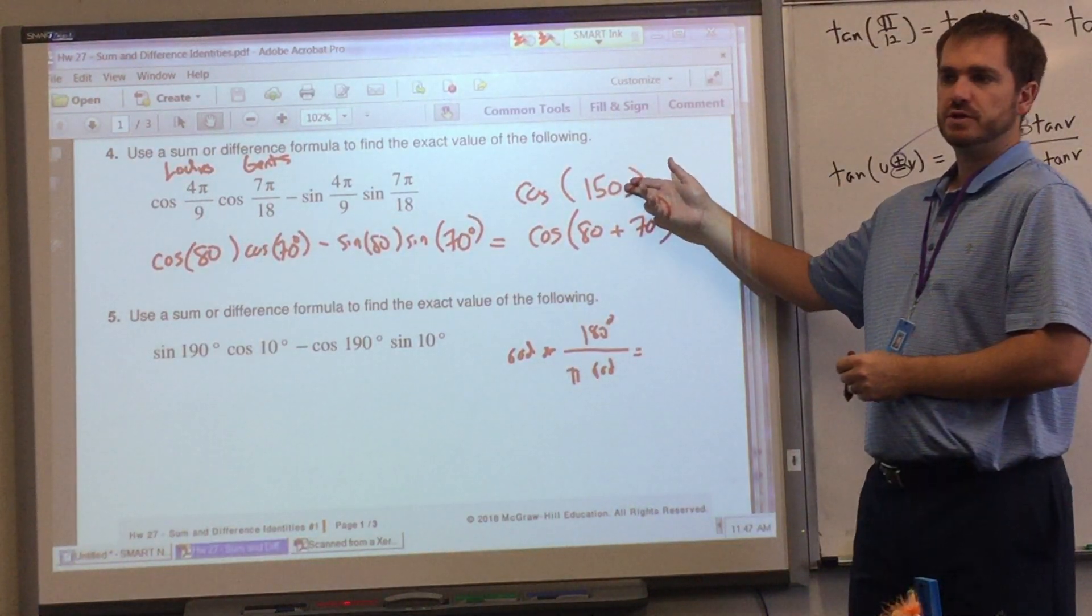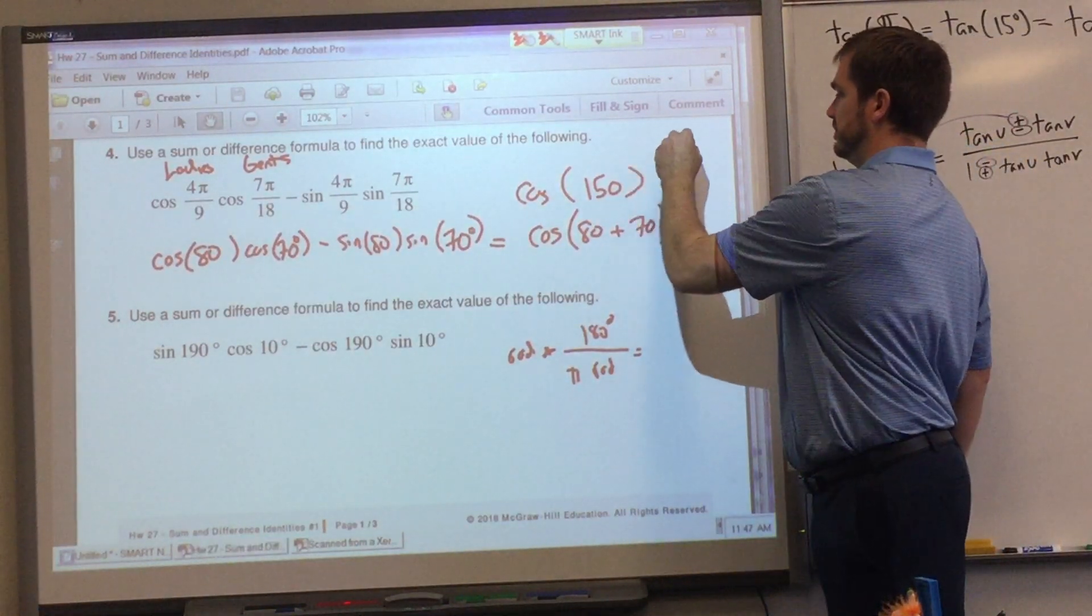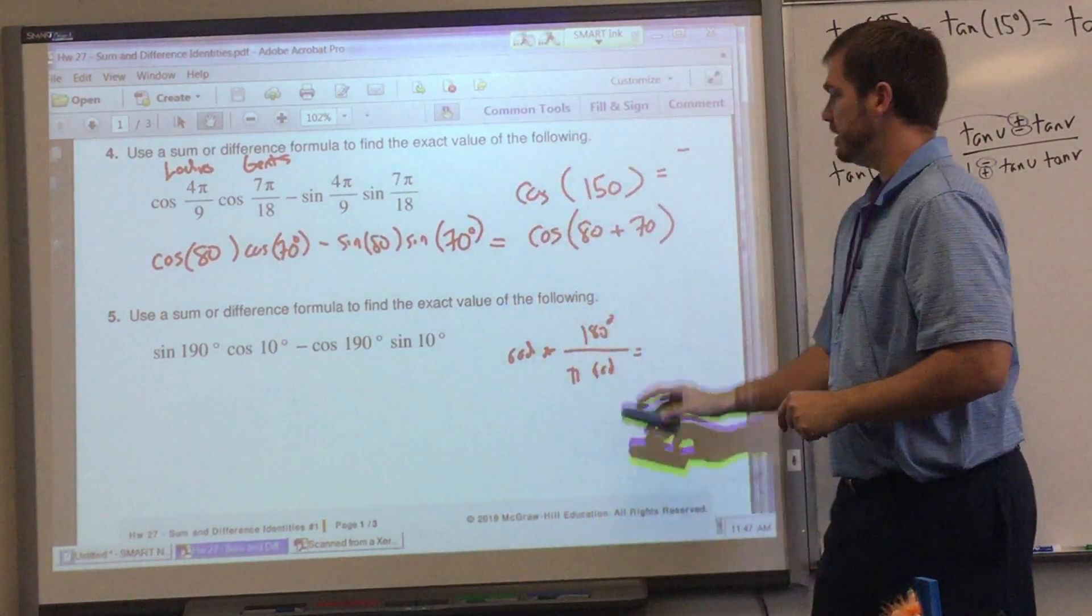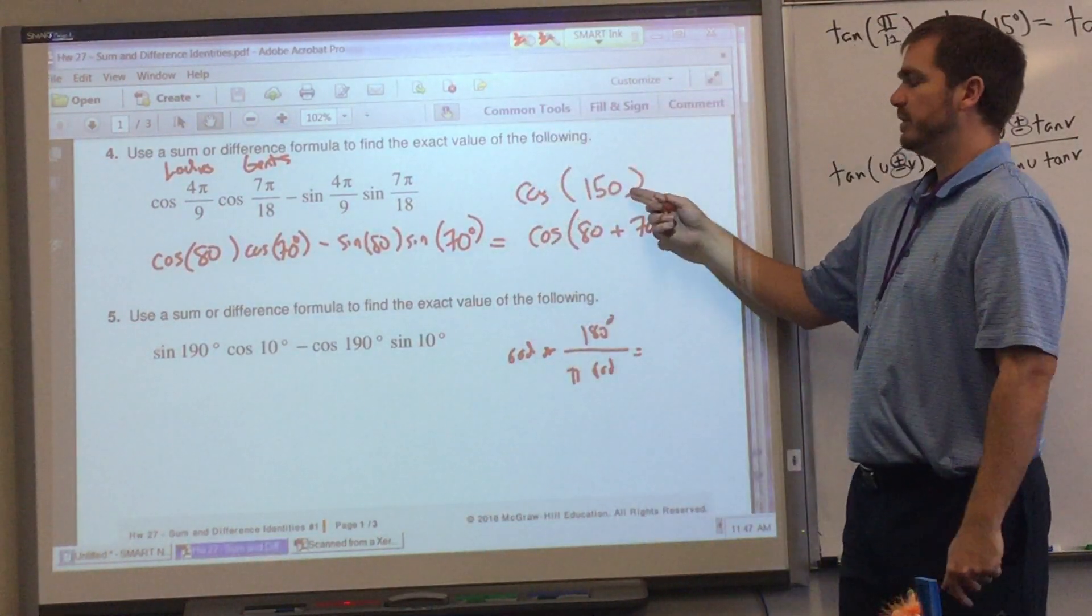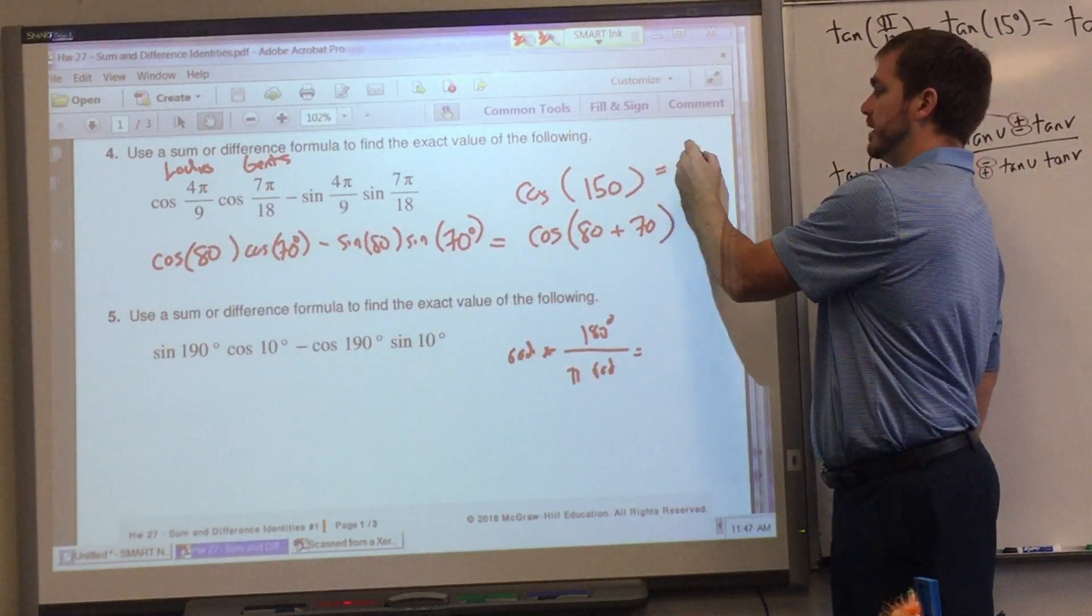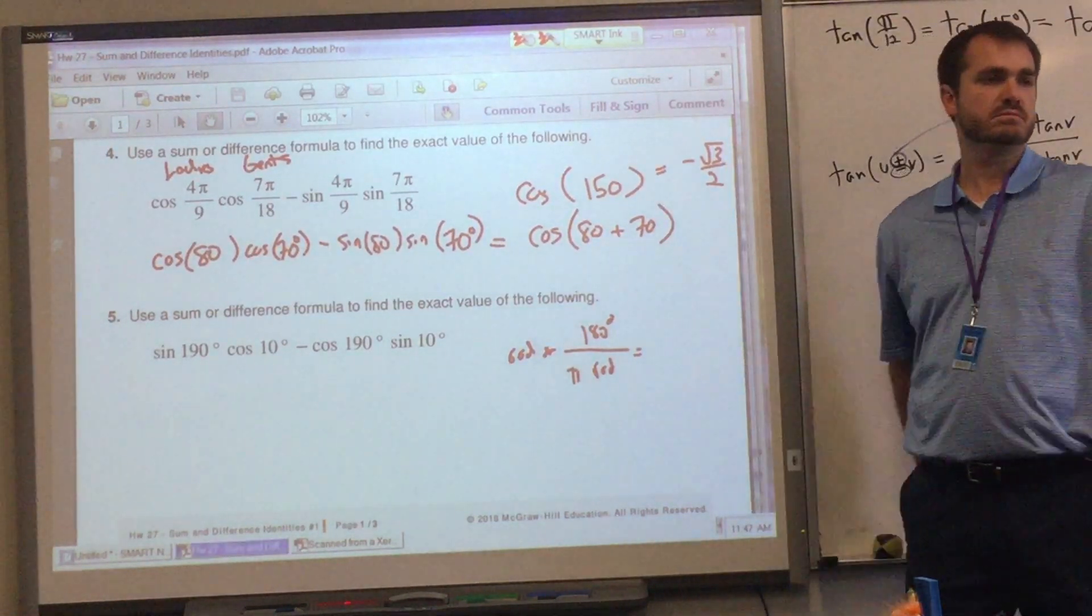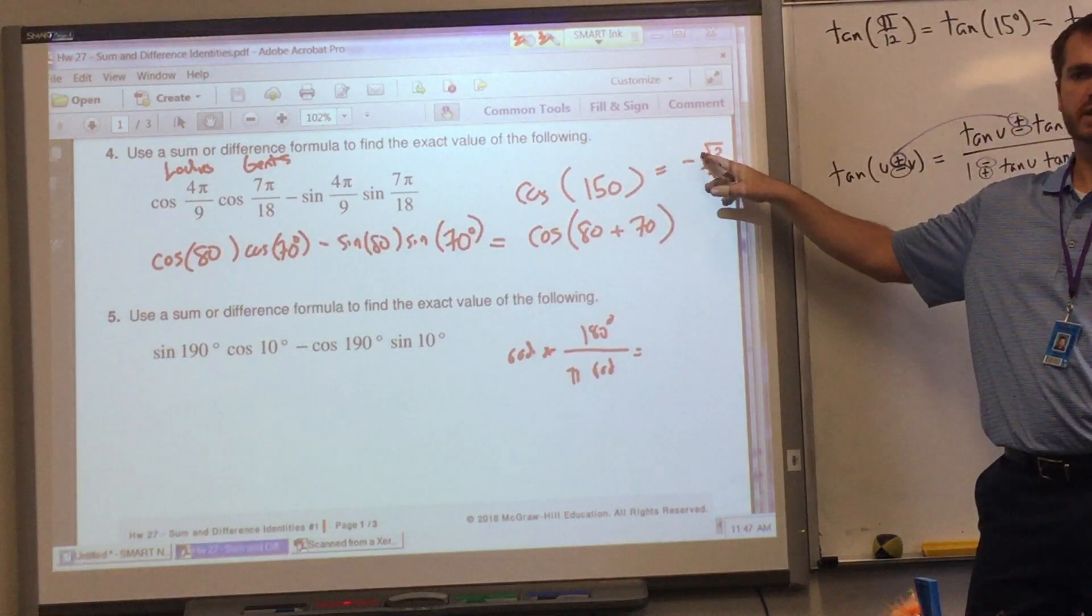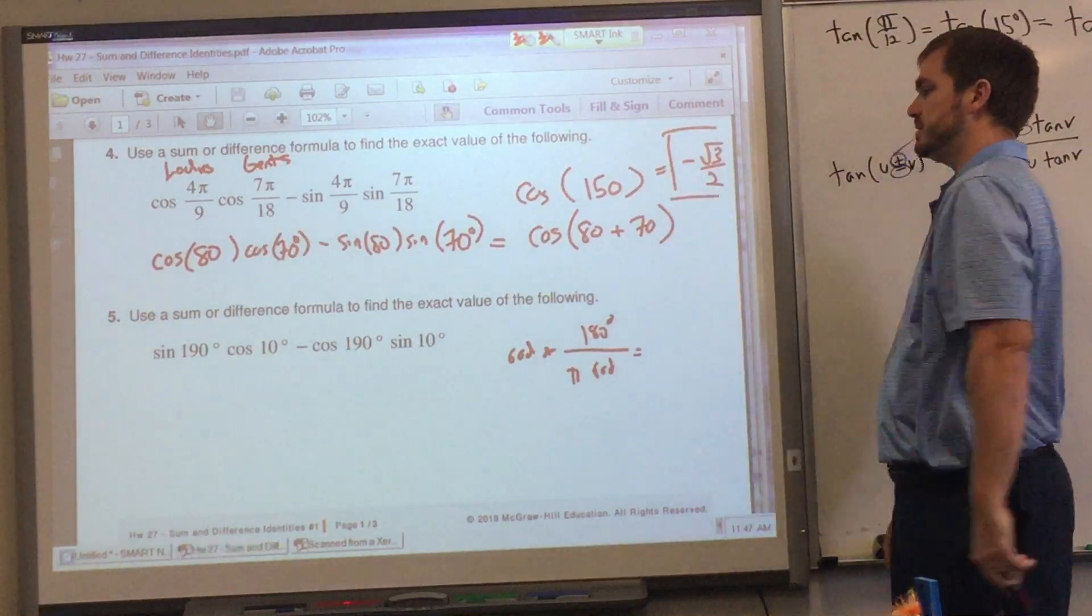Looking here at number four, once again use the sum or difference formula to find the exact value of the following: cosine cosine minus sine sine. Alright ladies first, ladies go ahead and turn that radians into degrees, and gents turn that 7π over 18 into degrees please. Stephanie, you got an answer for 4, 5, or 9? Do you want to review how to do radians to degrees? Radians times 180 degrees over π radians. Alright guys, we got 70 I'm hearing 70? Do I hear validation of that? Yes. Ladies, what about y'all? 80.